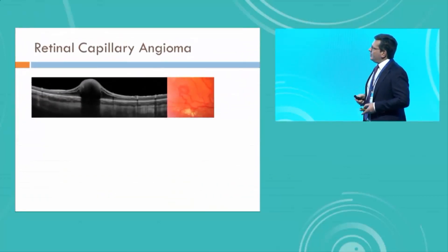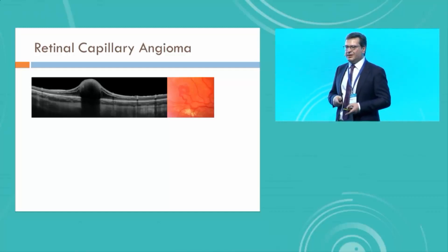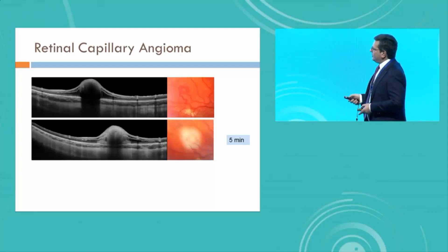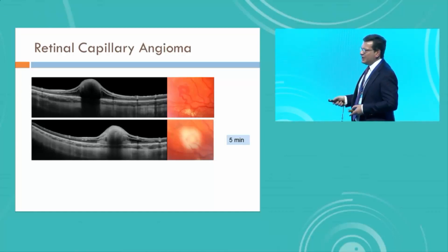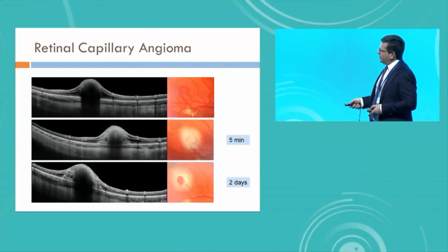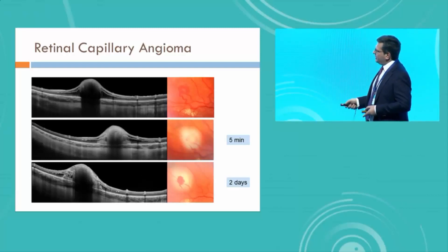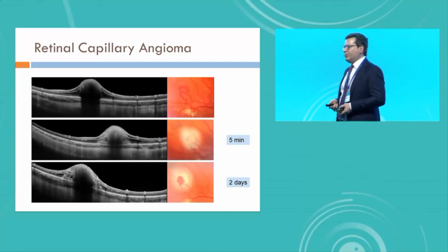This is a case of a capillary angioma. You see a dense tumor, and there is shadowing of the signal within the angioma because they are not only blood-filled but also contain a lot of fibrosis. Five minutes after treatment, the signal within the tumor has changed, and you now have a signal going up to the sclera. The choroid shows an immediate response — it is half as thick as it was five minutes before. Two days later, there is some shadowing but not as much as in the beginning, and the choroid is back to normal.